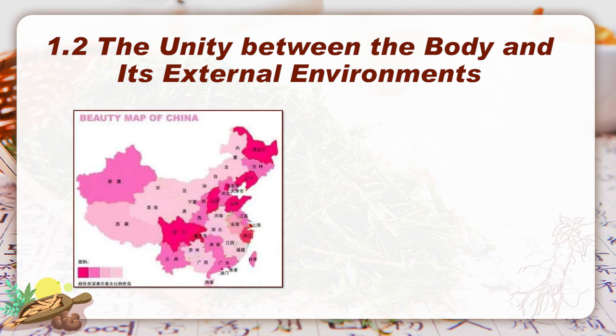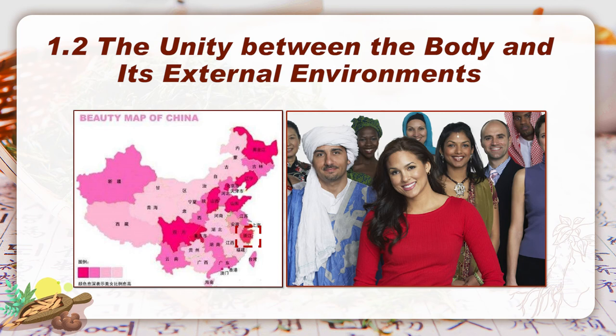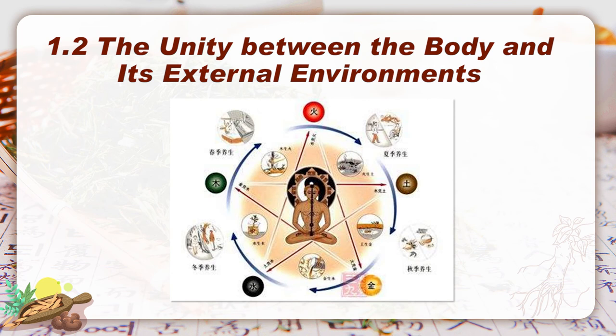It is a map of China — not exactly, it is a beauty map of China. With the color on the map going darker, the more good-looking people you can find in the local area. This is Zhejiang province where I come from — I am very proud of the dark red color. This is a very simple example that geography, weather, and other environmental factors impact the appearance of people. Not only our look, but also our health, living habits, and susceptibility to certain diseases are under the influence of external environments where we live.